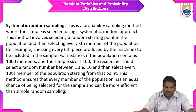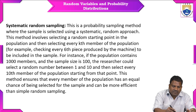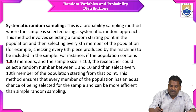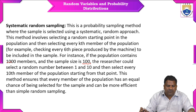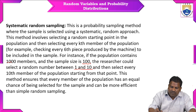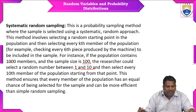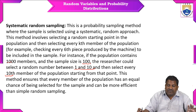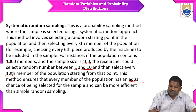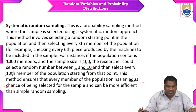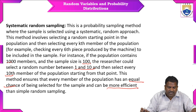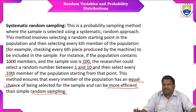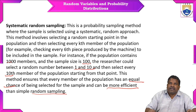For instance, if the population contains 1000 members and the sample size is 100, the researcher could select a random number between 1 and 10 and then select every tenth member of the population starting from that point. This method ensures that every member of the population has an equal chance of being selected and can be more efficient than simple random sampling.